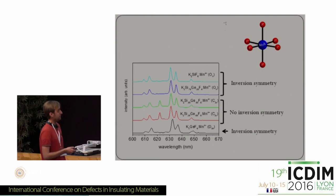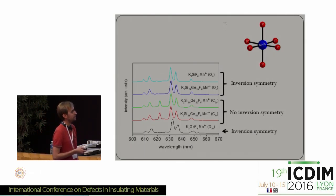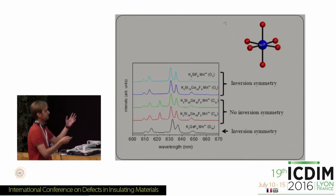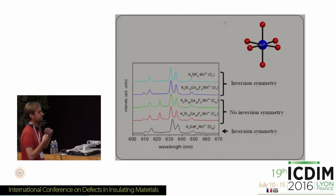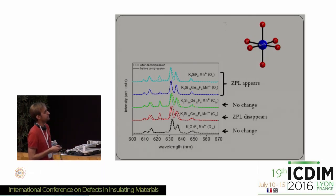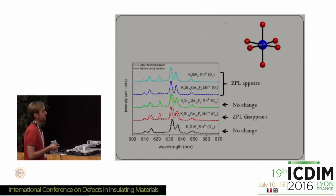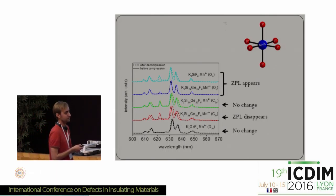Looking at the emission spectra for all samples, from pure KSF at the top to pure KGF at the bottom, we see that depending on crystal symmetry, we either have a zero phonon line from the start — where there is no inversion symmetry at the manganese 4+ site — or we do not. After compressing and decompressing back to ambient pressure, several changes are observed: for silicon-rich samples that did not have a zero phonon line, it emerges; some samples are unaffected like pure KGF; and one sample had its zero phonon line disappear.